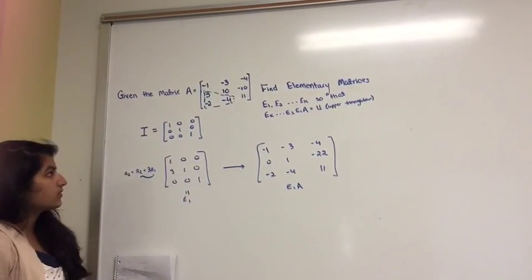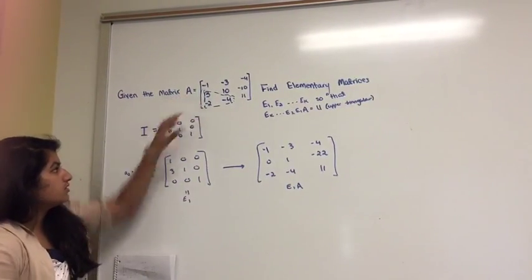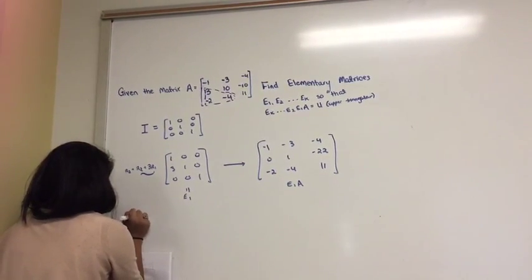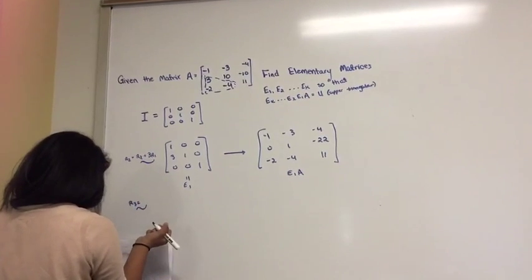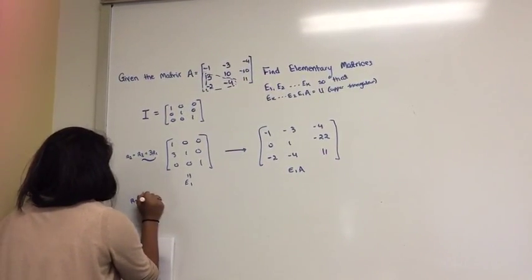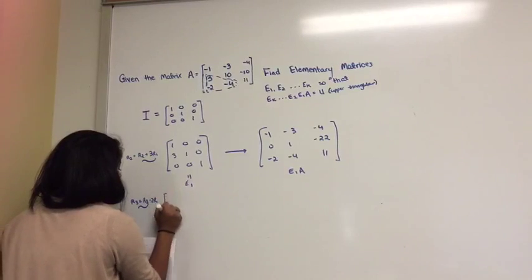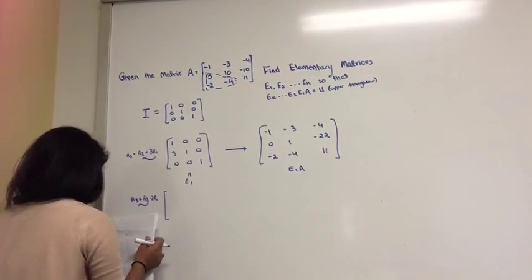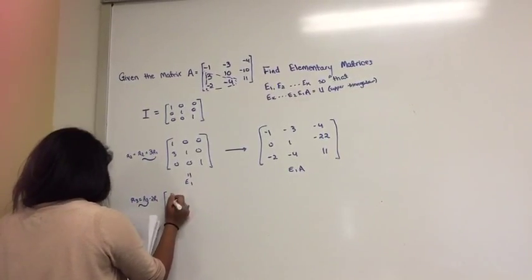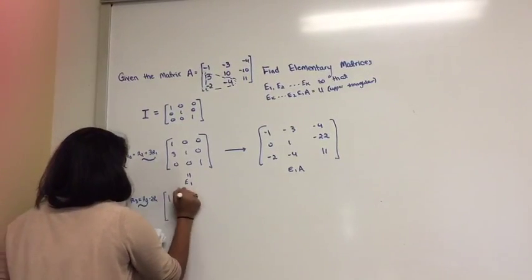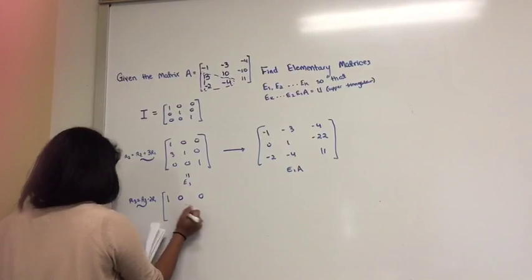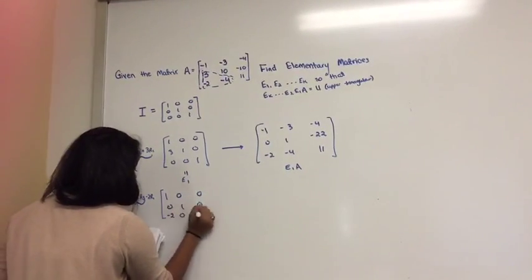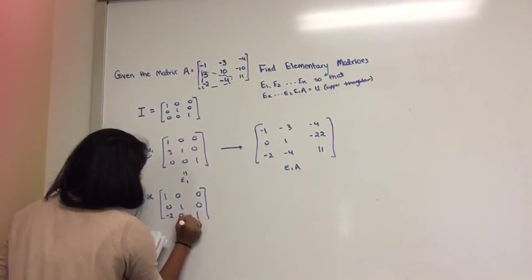Okay, so now you want to get rid of, you want to make the negative 2 a zero. So what you're going to do is you'll say R3 equals R3 minus 2R1. And so you perform this operation on the identity matrix. And so that gives you the identity matrix 1, 0, 0, 0, 0, 0, negative 2, 0, 1. And this is E2.